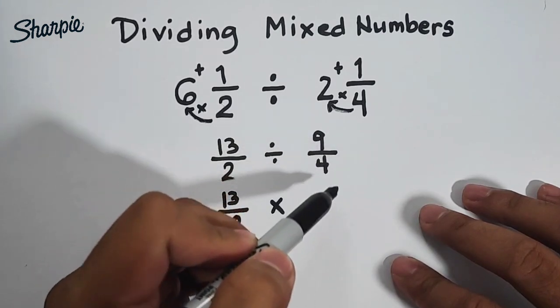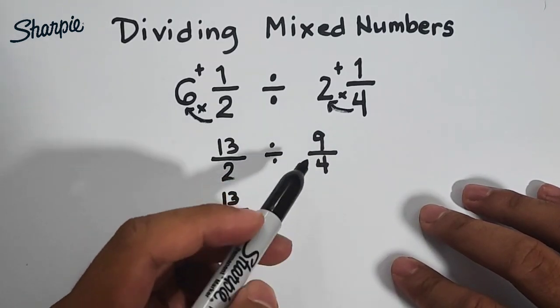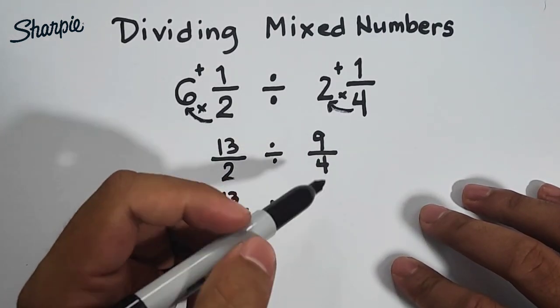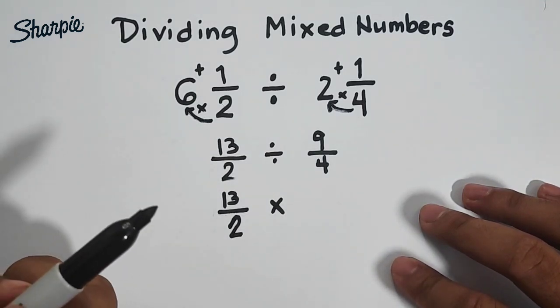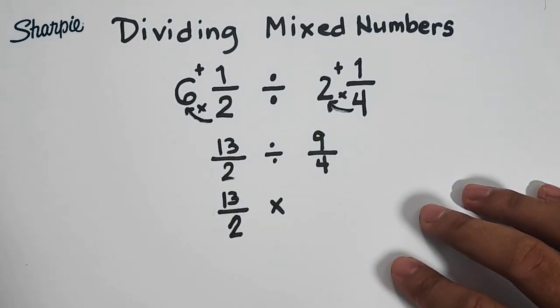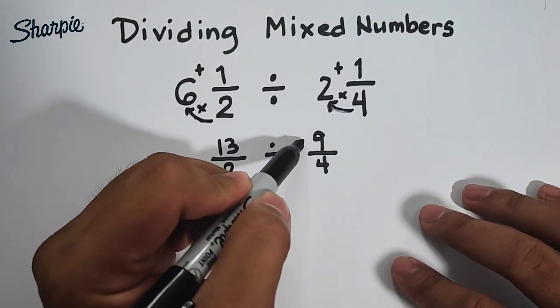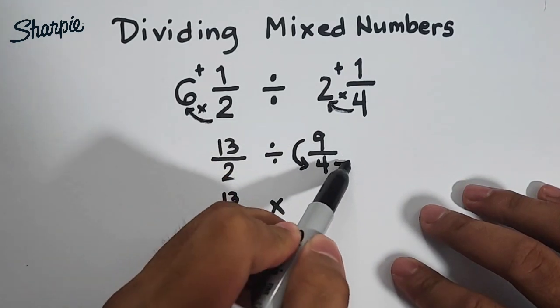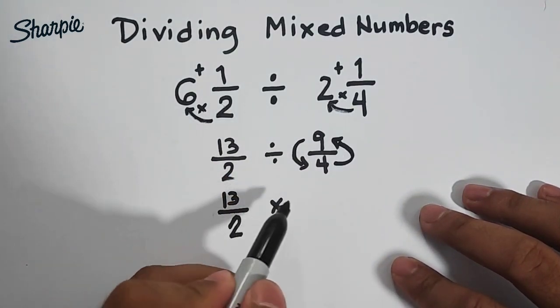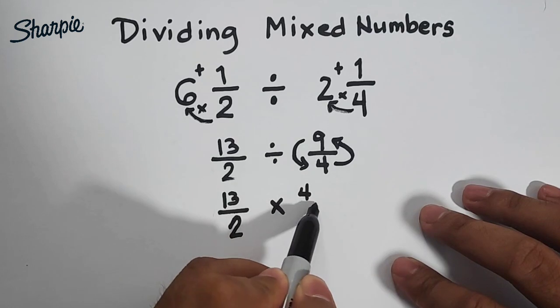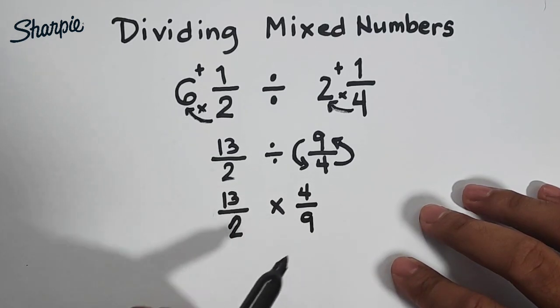So what you need to do in the next fraction is to get the reciprocal. So in other words, you will flip it or you will interchange the position of your numerator and denominator. So this 9 will come here and this 4 will come here. It will become 4 over 9.